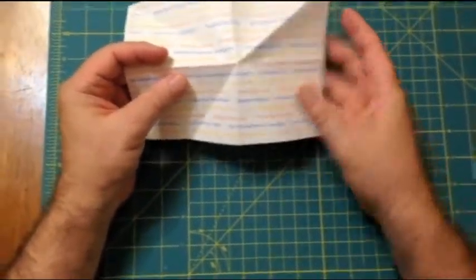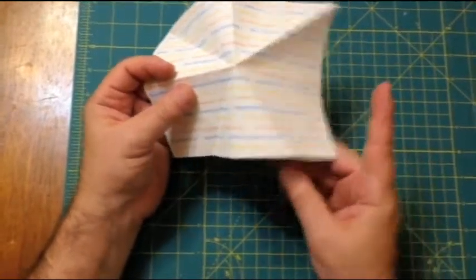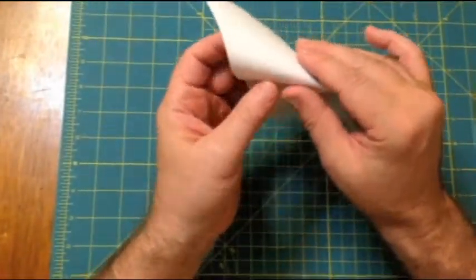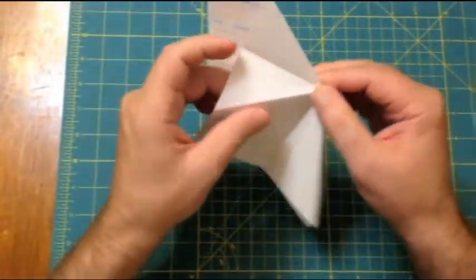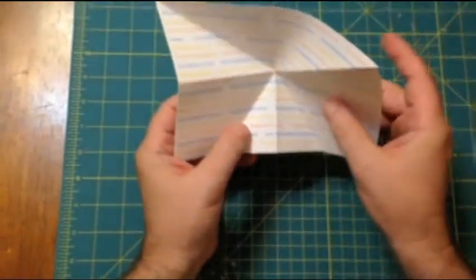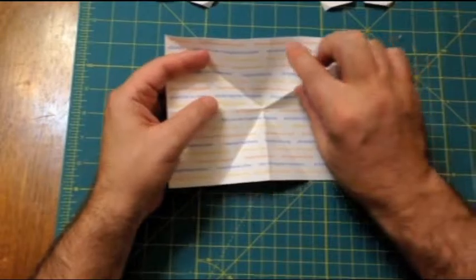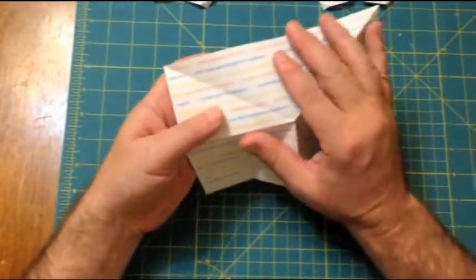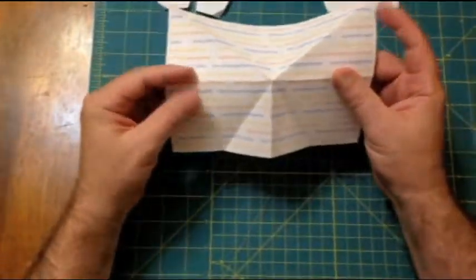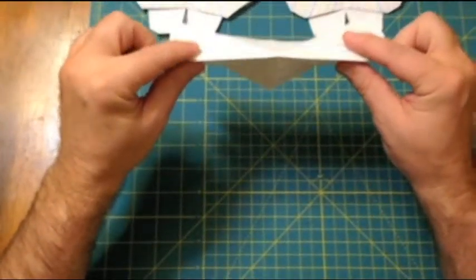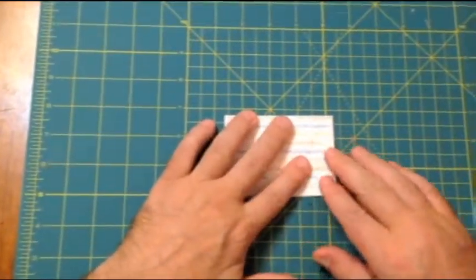Now we want to convert this fold here into a valley fold like this one. So we take this and turn it over and invert the fold. Now they're equal. And we want to take this fold and turn it into like this one, a ridge fold. So we take this and invert the fold. Now they're the same as well. Now we take our piece of paper and fold it in half again. Fold it in half once more. So it's nice and flat.